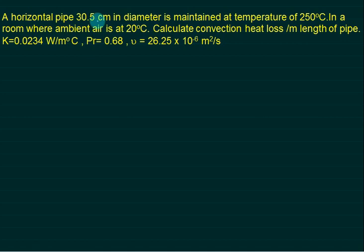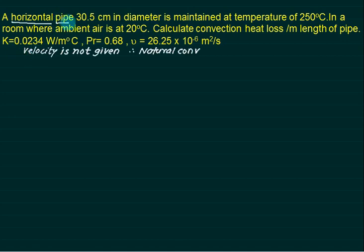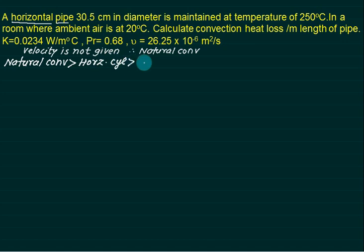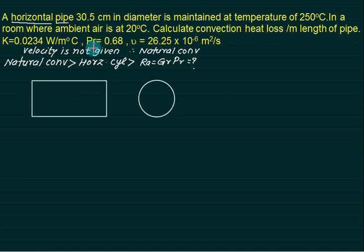Example 1: A horizontal pipe 30.5 cm in diameter is maintained at 250°C in a room where ambient air is at 20°C. Calculate convection heat loss per meter length of pipe. Since no velocity is given, this is a natural convection problem. The geometry is a horizontal cylinder, so we need to find the Rayleigh number (Gr × Pr). For a horizontal cylinder, Lc = diameter = 0.305 m.